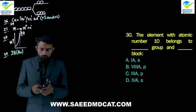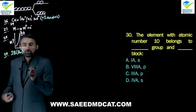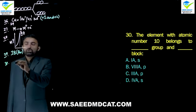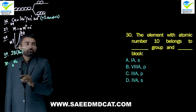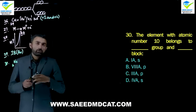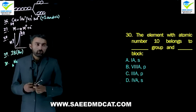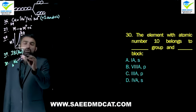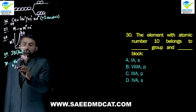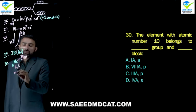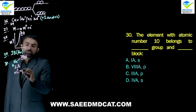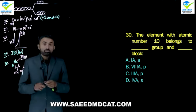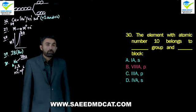Question 30: The element with atomic number 10 belongs to which group and which block? Atomic number 10 is neon. Neon appears at the rightmost position in its period among noble gases. Noble gases have group number 8A. Neon's electronic configuration is 2s2 2p6, so its valence electron is in the p subshell — making it a p block element. Beta option: group 8A, p block.